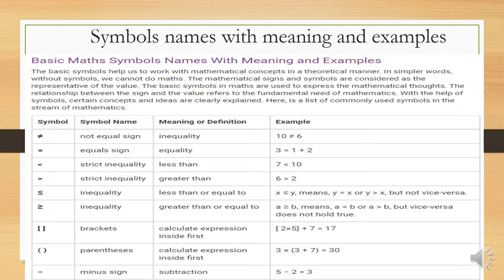The third symbol is strict inequality, meaning less than. Example: 7 is less than 10 — and that's absolutely correct. The next symbol is also strict inequality, meaning greater than. Example: 6 is greater than 2.